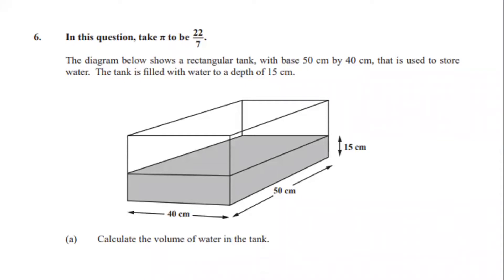Question 6 says: in this question we're taking pi to be 22 over 7. The diagram below shows a rectangular tank with base 50 cm by 40 cm that is used to store water. The tank is currently filled with water to a depth of 15 cm, and all of that is illustrated on the diagram.